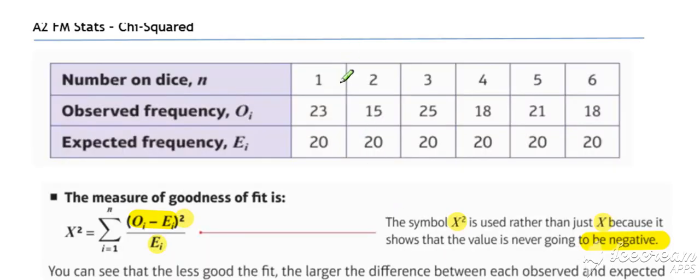So referring back to a previous example, the number of cells in this earlier example is six. We're making six comparisons. But our number of degrees of freedom is the number of cells take away the number of constraints. Now, because we know that in this instance the dice was rolled 120 times...